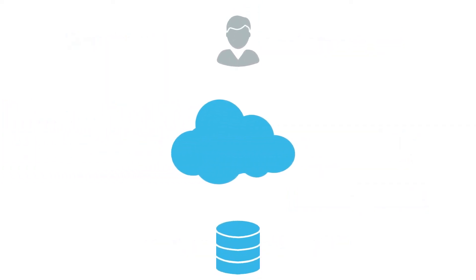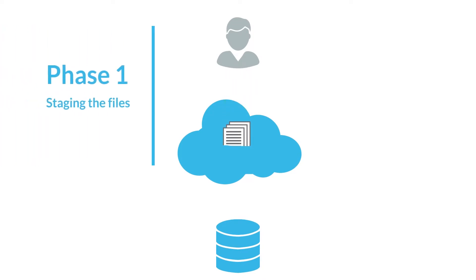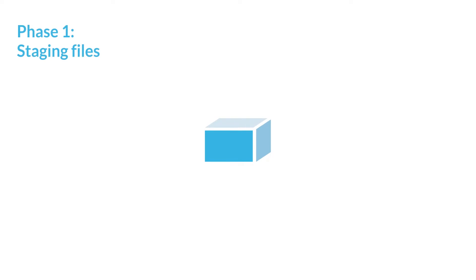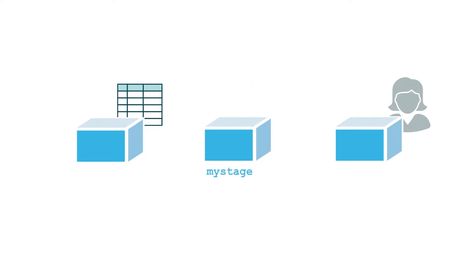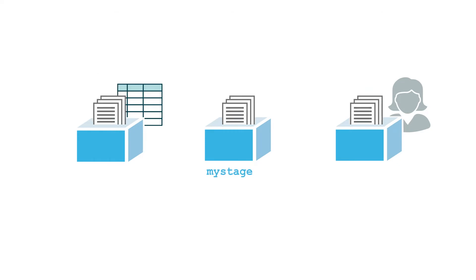Bulk loading is performed in two phases. First, you upload your data files to a location where Snowflake can access the files — this is referred to as staging your files. Then, you load the data from these staged files into your table. Snowflake lets you stage files in internal locations called stages; each table and user has a stage, and Snowflake also supports creating named stages. Internal stages enable convenient and secure storage of data files without requiring any external resources.